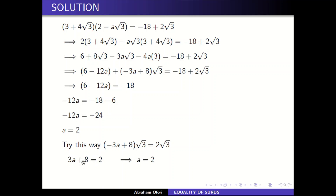Because if I take eight to the other side it becomes two minus eight which gives negative six. Dividing by negative three gives a equals two. So very simple. Now we'll use equality of surds to find what we call the positive square root of a surd.